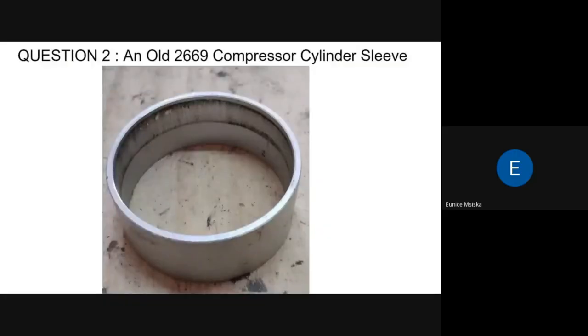Those are the steps to follow when reusing old cylinder sleeves. By doing so, the compressor can function very well. The graphic shown is the cylinder sleeve for an old Thomas 2669 compressor. The host thanks Eunice and Linda, noting that if technicians face a similar issue without the right cylinder sleeves, they now know what to do. If further issues arise, they can always reach out for additional solutions.